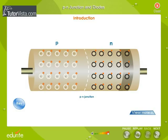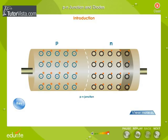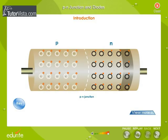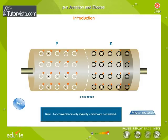Immediately after it is formed, the P region contains holes which are mobile and negatively charged impurity ions which are immobile, and the N region contains positively charged impurity ions which are immobile and mobile electrons.